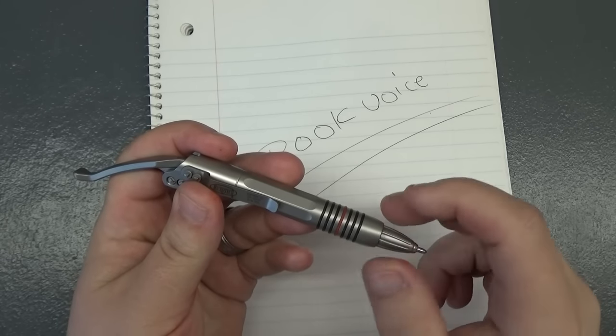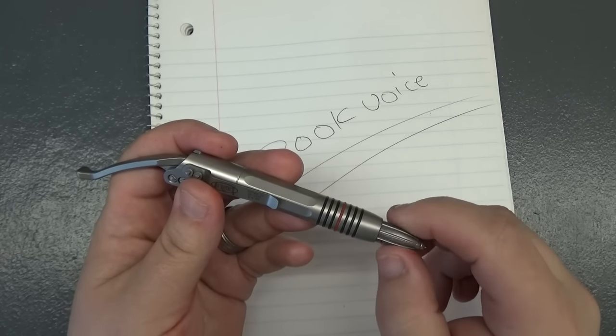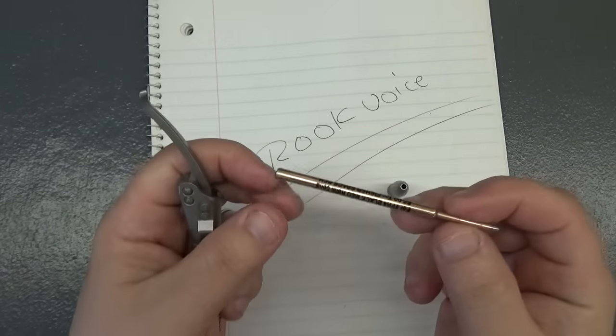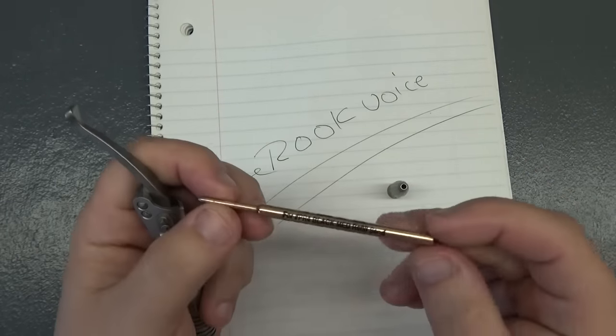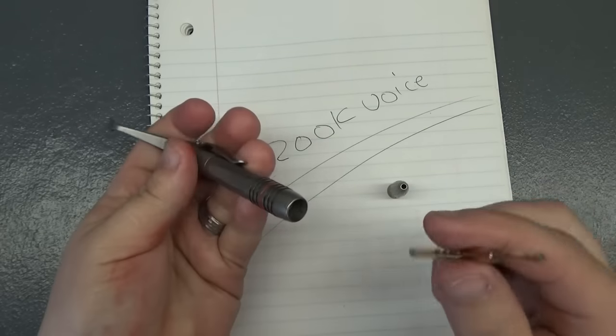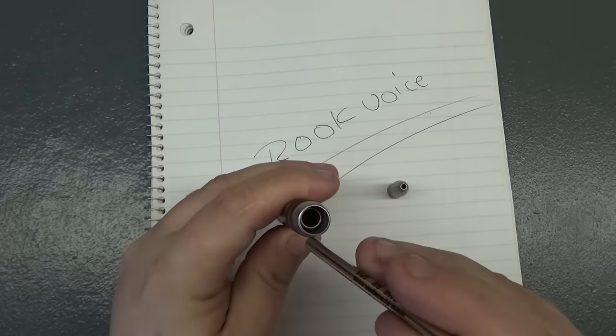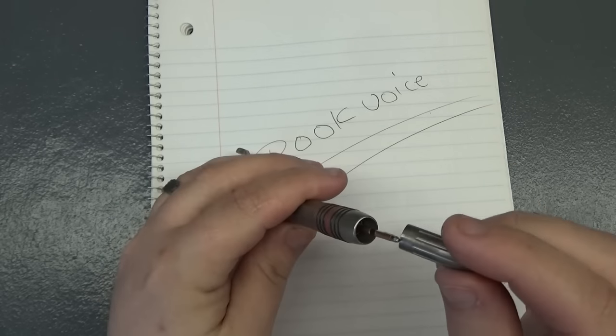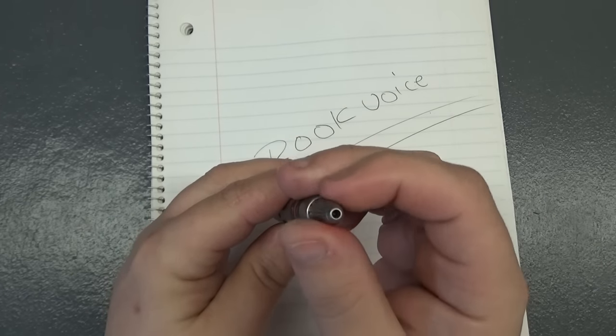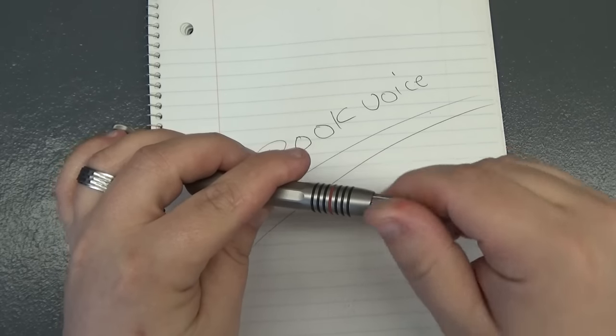And to change that, you just unthread this cartridge cap here. It's got a lot of thread to it. And then there's your ink cartridge. And then it just slides into your ink cartridge mechanism and that threads back on. Like I said, there's a lot of threads on it.